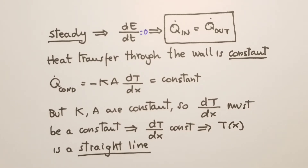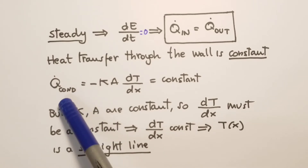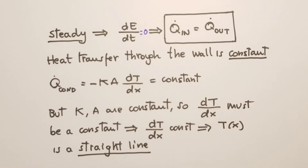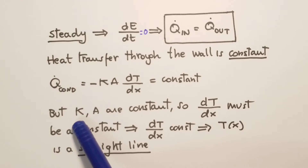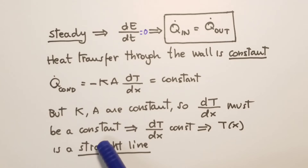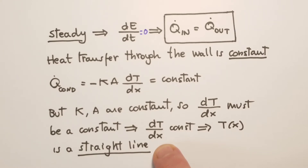We can use Fourier's law of conduction: Q conduction equals minus kA dT/dx, which is constant. We consider cases where thermal conductivity k is constant and A, the cross-sectional area, is also constant. Therefore dT/dx must be a constant. If the derivative of temperature with respect to x is constant, the temperature profile must be a straight line.